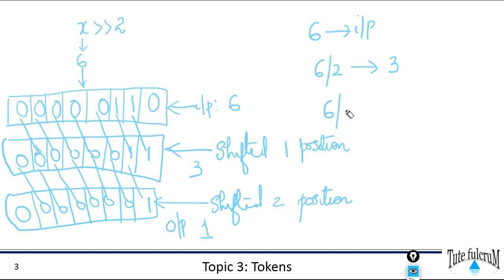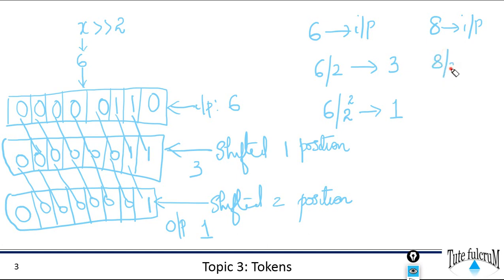That is equivalent to six divided by two to the power of two, which gives one. So if the input was eight, shifting right by one bit position gives eight divided by two, which is four. Shifting right by two bit positions gives eight divided by two squared, that is eight divided by four, which equals two. Let's write the program and verify this.